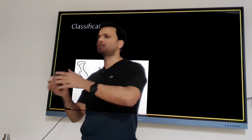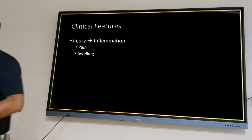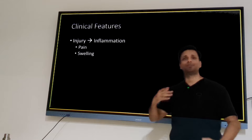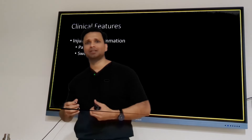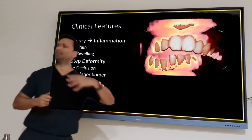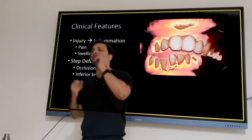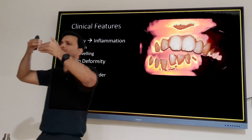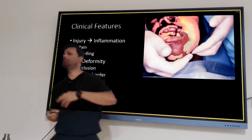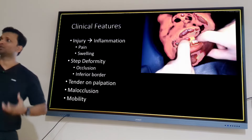Clinical features are mostly common sense: pain, swelling, and tenderness on palpation at the fracture site with soft tissue injuries. Because of muscle pull there will be deranged occlusion and step deformity — both in the occlusion and palpable at the inferior border of the mandible. There will also be malocclusion and mobility of the fracture segment.